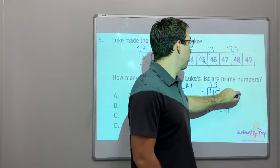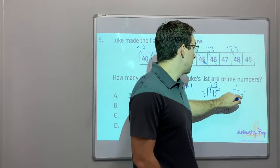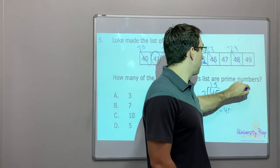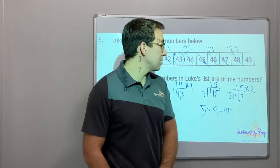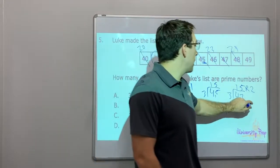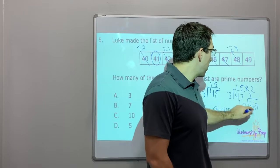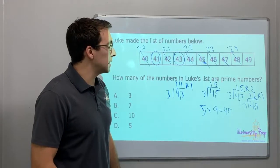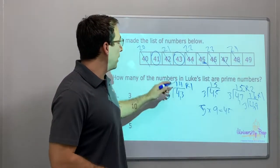What about 47? 47 divided by 3 is 15 remainder 2 — so it's not divisible by 3. It's not even, not divisible by 5. So 47 is prime. What about 49? 49 divided by 3 is 16 remainder 1 — not divisible by 3, not divisible by 5, not even.